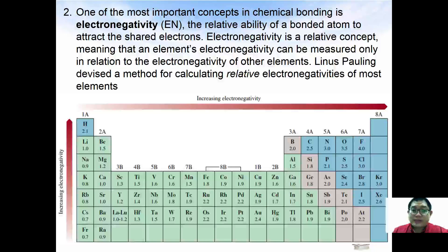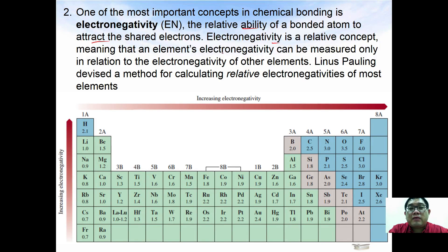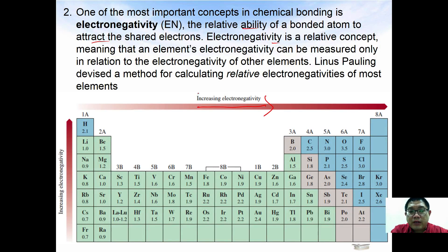One of the most important concepts in chemical bonding is electronegativity — the relative ability of bonded atoms to attract the shared electron pair. Electronegativity is a relative concept, meaning an element's electronegativity can only be measured relative to other elements. Looking at the periodic table, electronegativity increases going across a period and decreases going down a group.